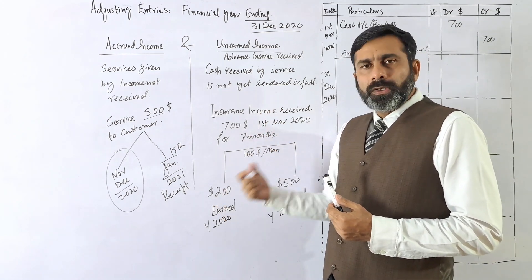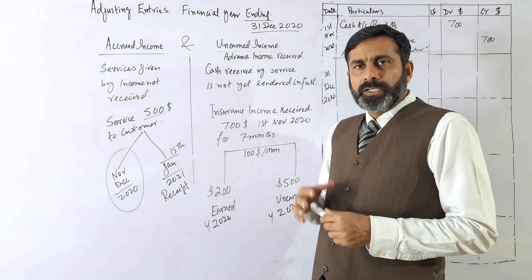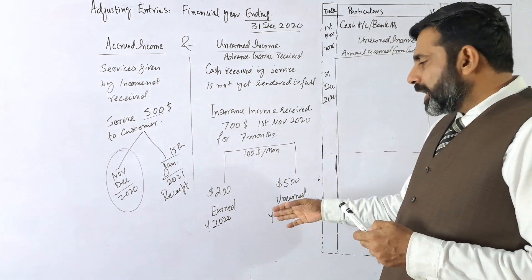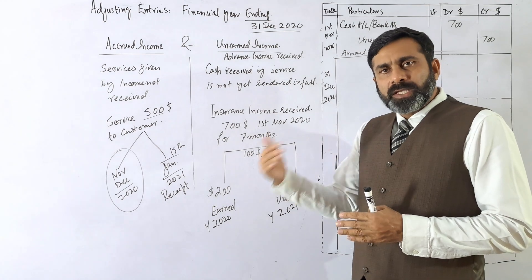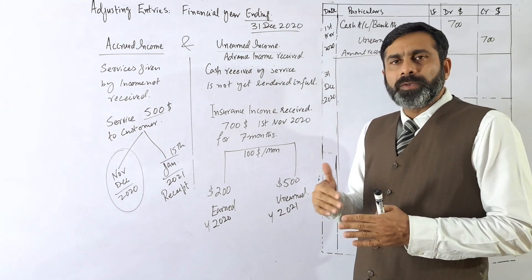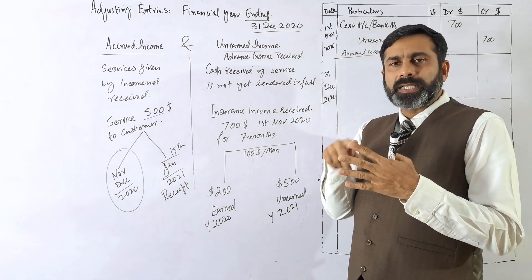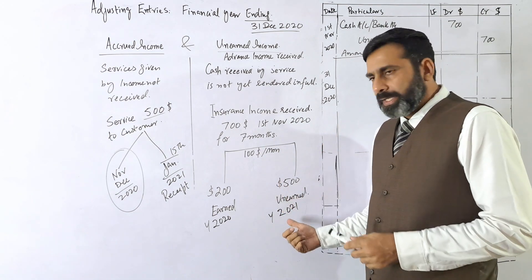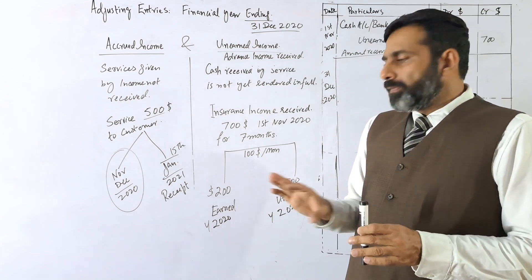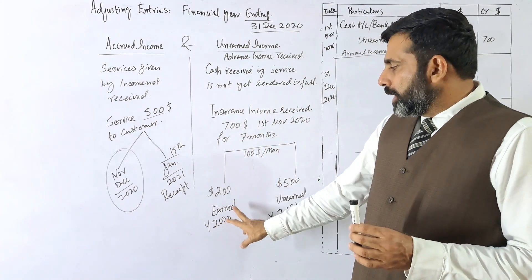Since approximately $100 per month is the rate, two months — November and December — relate to this year 2020, and five months relate to next year 2021. So out of $700, you have earned only $200 as insurance income for 2020. You still have to give service to the customer in 2021 for the next five months: January, February, March, April, and May.